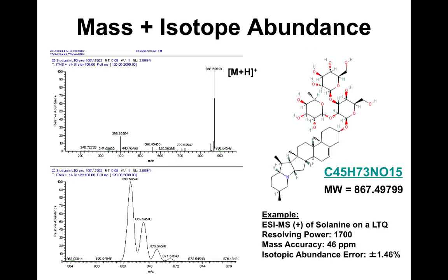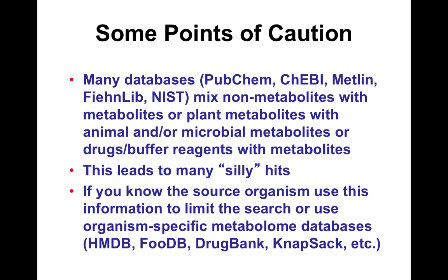An example of a compound identified using isotopic abundance, parent ion mass, NMR, and MS-MS: high-resolution mass spec with isotopic abundance narrows down the molecular formula, and by matching to known compounds for a particular plant, a good identification was achieved and confirmed. This was a known unknown from tomato. Many databases, especially PubChem but also METLIN and NIST, mix non-metabolites with metabolites — which is an important caveat when searching.